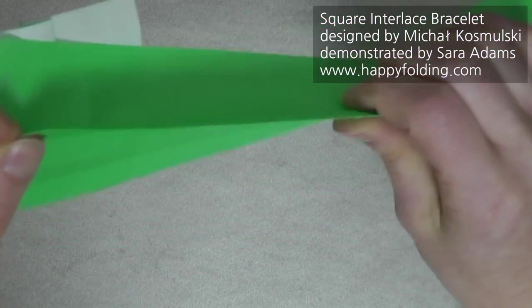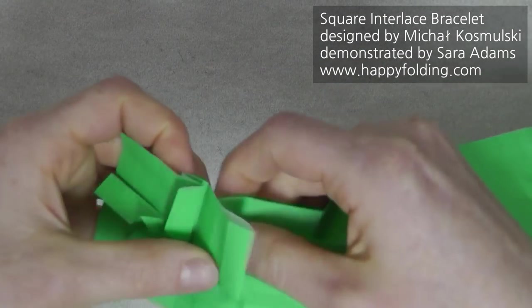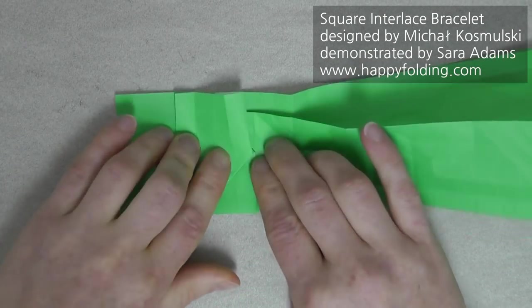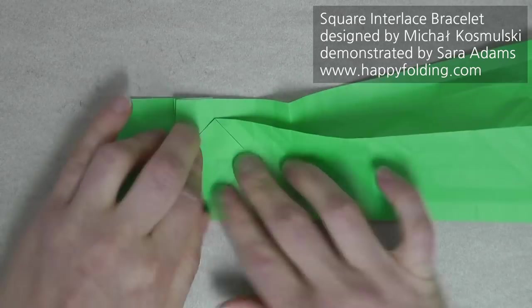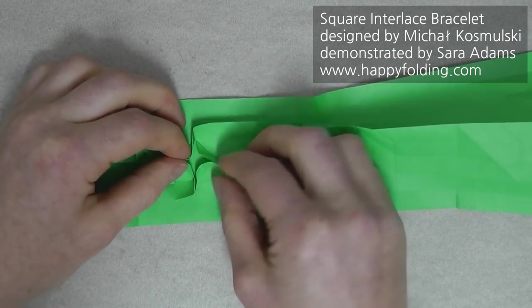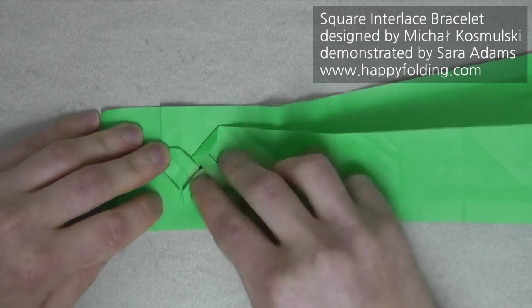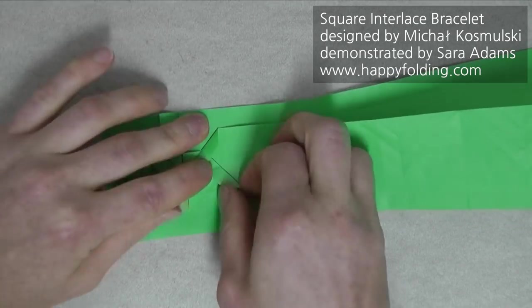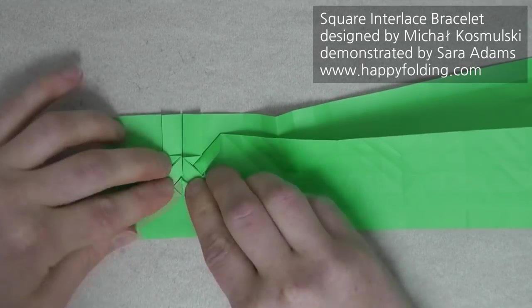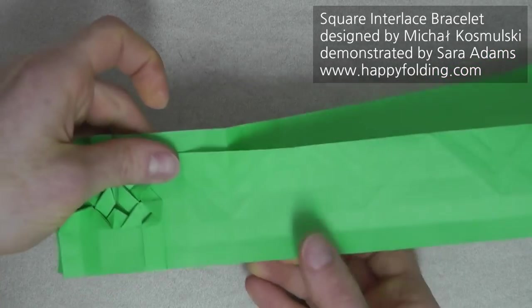It's always going to go up once and then down once because these square interlace molecules will alternate between going clockwise and counterclockwise. Then, again, make that windmill appear, and then add the inside reverse folds. And move on to the next molecule.